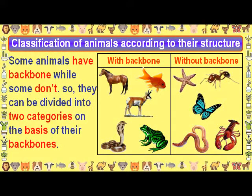Classification of animals according to their structure: Some animals have a backbone while some don't. So they can be divided into two categories on the basis of their backbone.